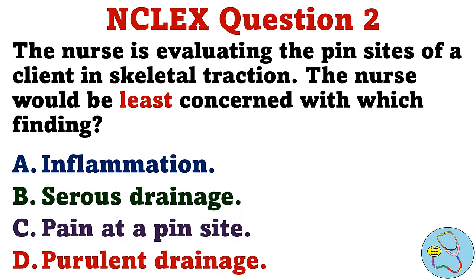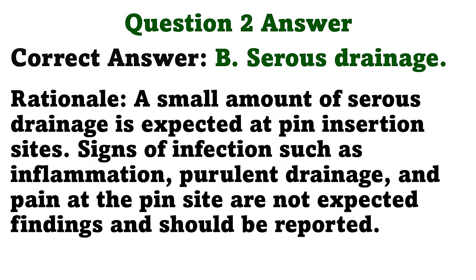The nurse is evaluating the pin sites of a client in skeletal traction. The nurse would be least concerned with which finding? A. Inflammation. B. Serous drainage. C. Pain at a pin site. D. Purulent drainage. The correct answer is B: serous drainage. A small amount of serous drainage is expected at pin insertion sites. Signs of infection such as inflammation, purulent drainage, and pain at the pin site are not expected findings and should be reported.